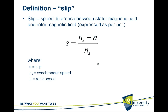The stator magnetic field speed minus the rotor speed, divided by NS — the synchronous speed — gives us the slip. That is the key relationship.